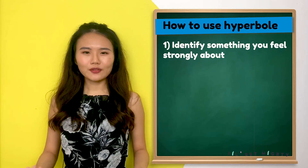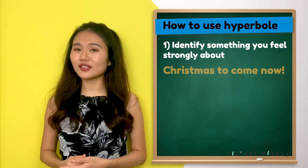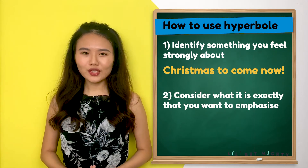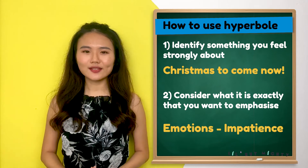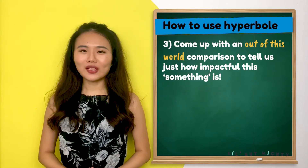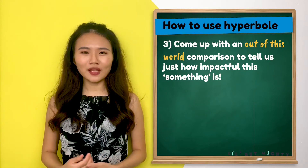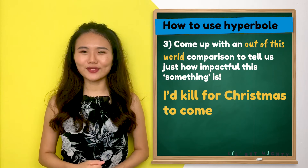Christmas is coming up, isn't it? What if your parents have promised you the latest PlayStation 5, but you'll only receive it on Christmas Day itself? What would you be feeling in this situation? Let's return to our three steps. Something you're probably feeling strongly about is that you want Christmas to come now. Therefore, the emotion you want to emphasize is impatience. If I wanted something very badly and it was only coming more than a month from now, I'd kill for Christmas to come soon. I was kidding — I wouldn't actually kill — but that's a hyperbole for you. I've exaggerated my impatience so much that now you know exactly how impatient I am and how desperate I am for the PS5 to come.